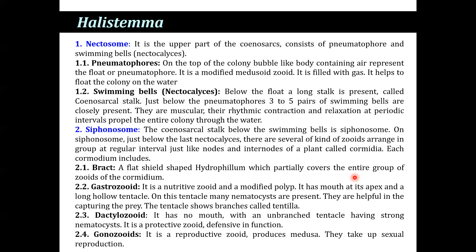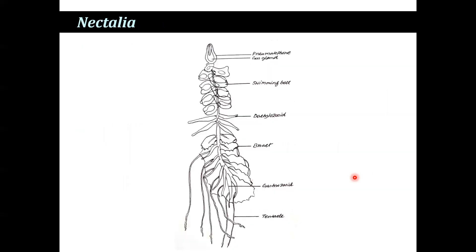The bract is a flat, shield-shaped hydrophylium that covers the entire group of zooids in the cormidium. The gastrozooid is a nutritive zooid — a modified polyp with a mouth at its apex and a long hollow tentacle on which many nematocysts are present, helpful in capturing prey; the tentacle also bears branches called tentilla. The dactylozooid has no mouth and has branched tentacles with strong nematocysts — it is a protective zooid. The gonozooid is a reproductive zooid that produces medusae for sexual reproduction. Halistema displays the greatest polymorphic tendency among siphonophorans.